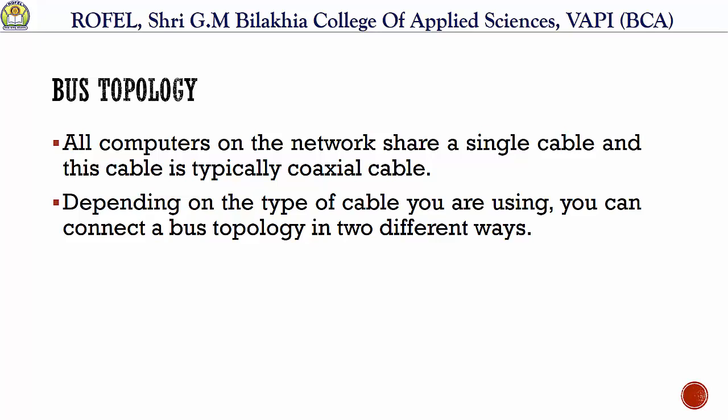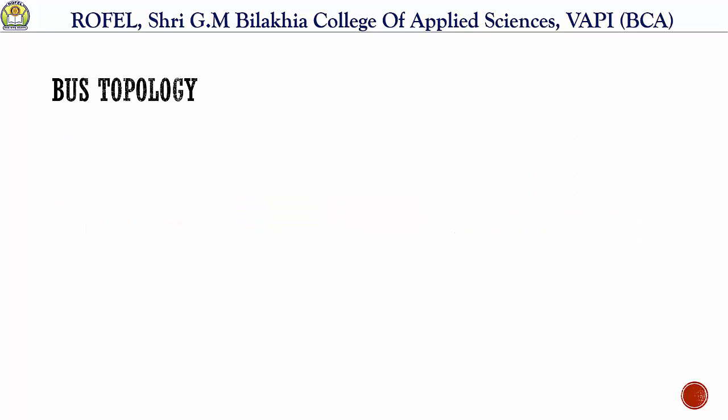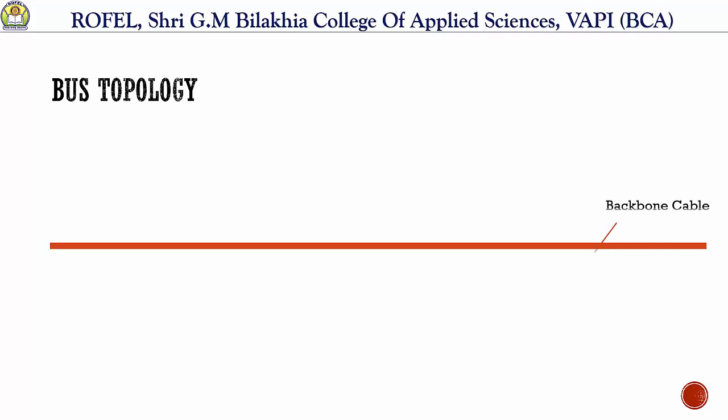There are two ways in which we can connect bus topology. The first one is bus topology using thick net coaxial cable. What do we mean by thick net coaxial cable? If you are networking using thick net coaxial cable, then the bus network will have a central backbone cable that is thick coaxial cable. So two ways: first is thick net, and second is thin net.